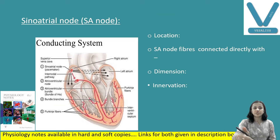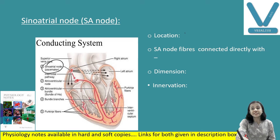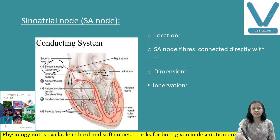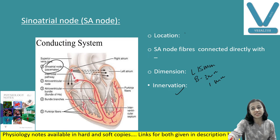The SA node, or sinoatrial node, is also known as the pacemaker of the heart. It is located on the posterolateral wall of the right atrium, just below the opening of the superior vena cava. SA node fibers are connected directly with the atrial muscle fibers, so impulses and action potentials pass from SA node to the atrial muscle fibers. Its dimensions: 15 mm length, 3 mm breadth, 1 mm thickness — a flattened ellipsoidal strip of specialized cardiac muscle. It is innervated by the right vagus nerve as well as sympathetic fibers.